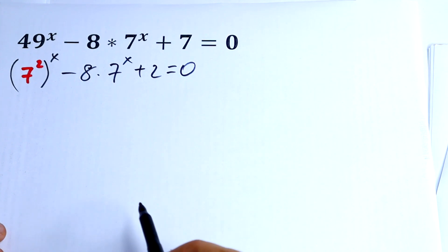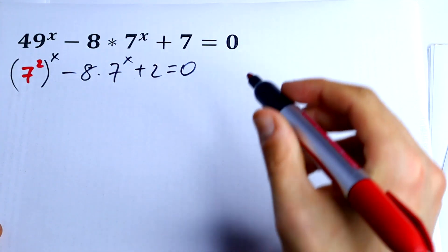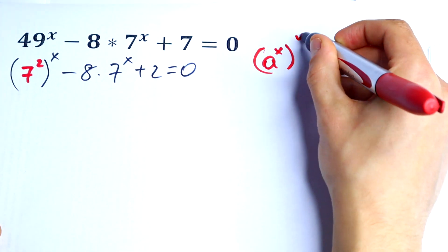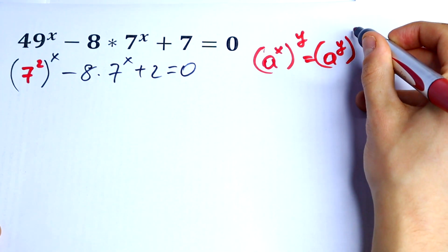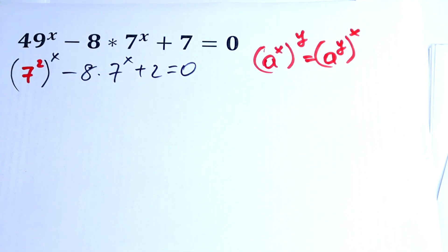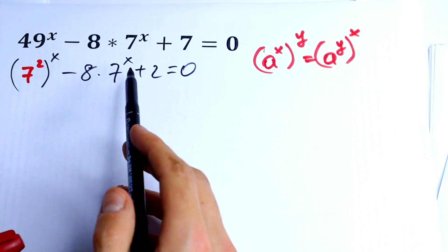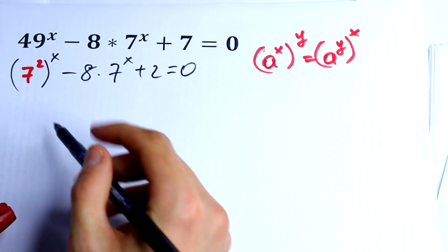The next rule I will use would be the rule of interchange. So if we have a to the power x all raised to the power y, it would be equal to a to the power y all to the power x. This is the rule of interchange, so I can easily use it right here.